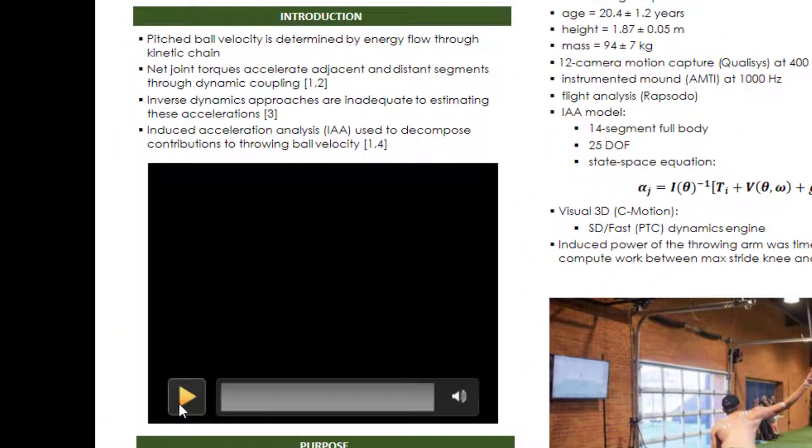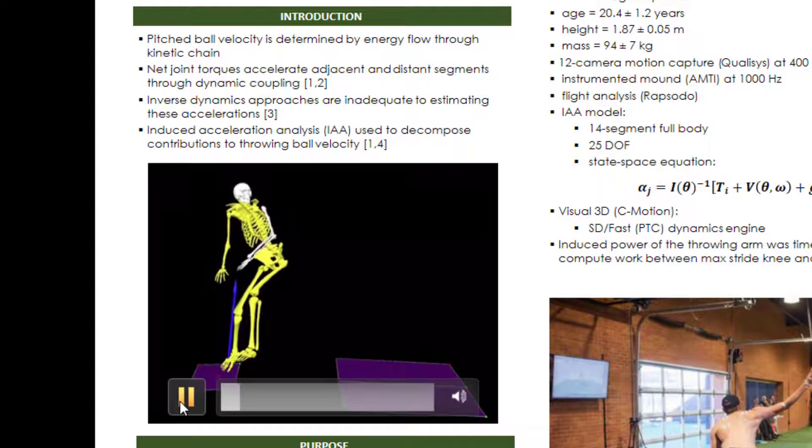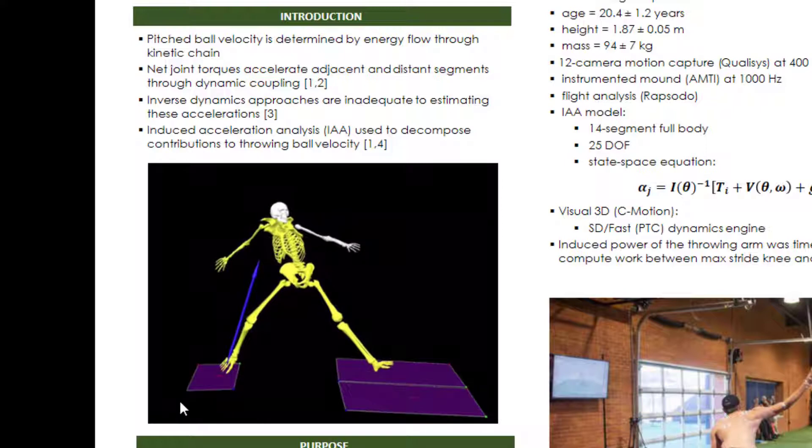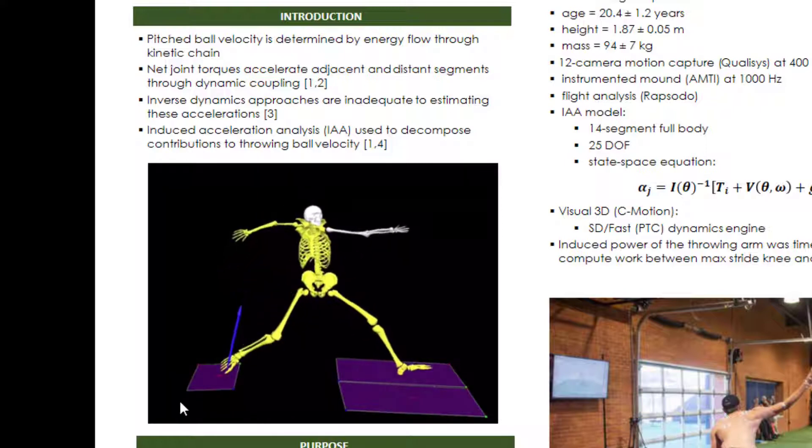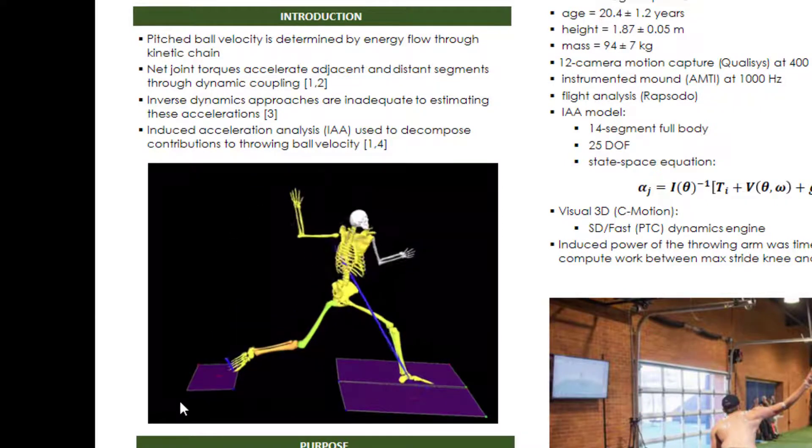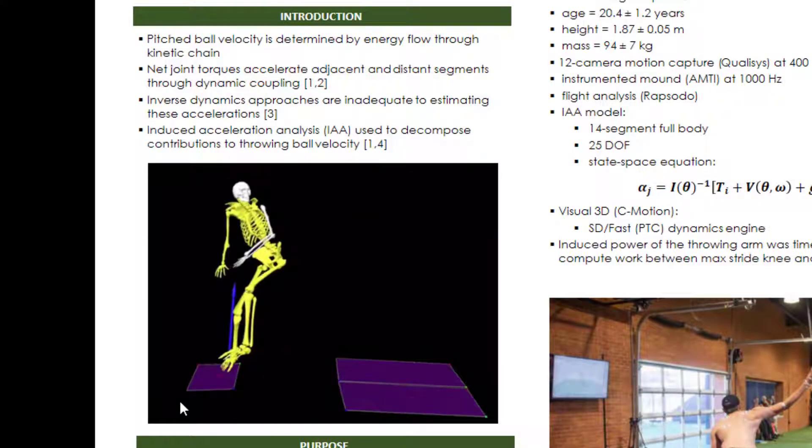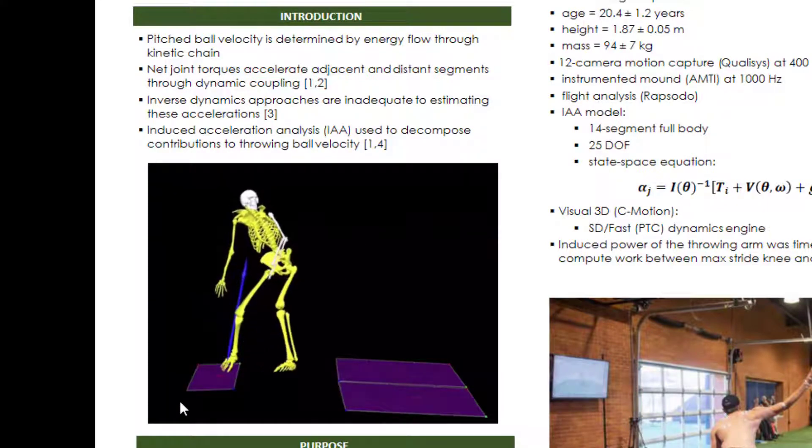Now, like other multi-segment motions, the baseball pitch, or more specifically the velocity of the baseball, is created by movements and rotations of the various segments of the entire body, what we call the kinetic chain. And we know through research that the energy flows up through the kinetic chain in a proximal to distal fashion.